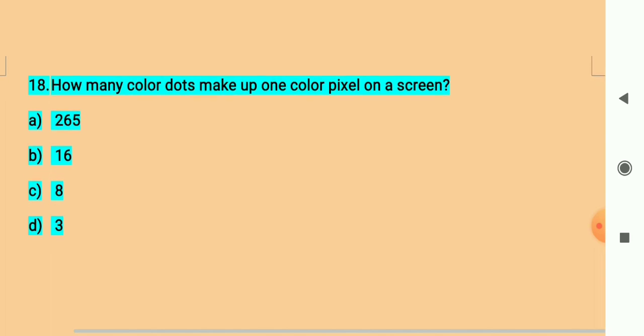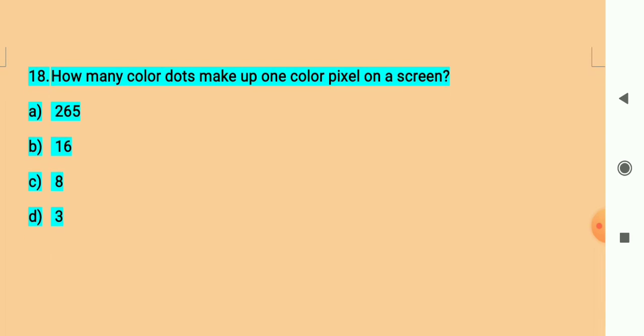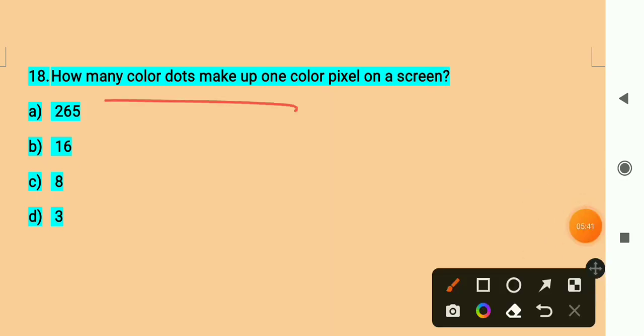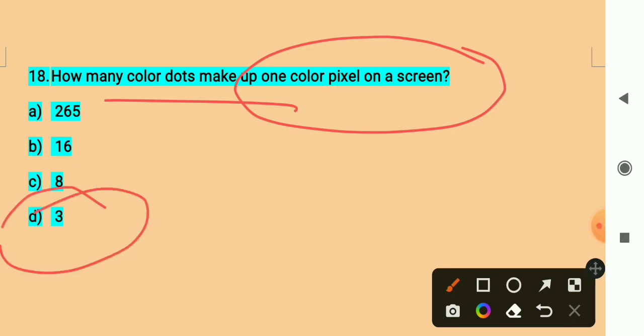Question number eighteen. How many color dots make up one color pixel on a screen? How many color dots are in one color pixel on a screen? Option D is the right answer - three color dots.